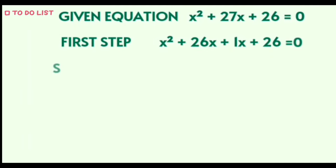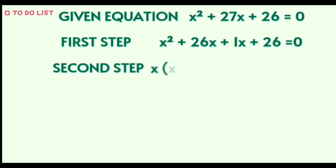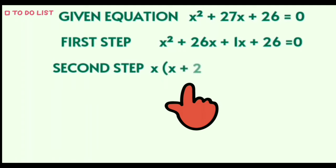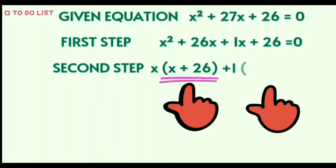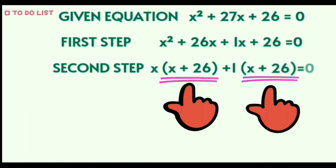The second step is to take out the common terms, so the equation gets converted into x in bracket x plus 26, plus 1 in bracket x plus 26, is equal to 0. An important tip: always make sure the terms in both brackets are exactly the same, including the signs.